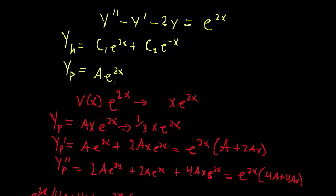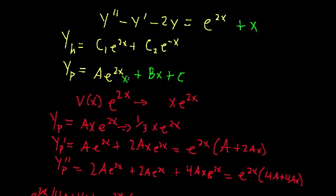The major point is: if you ever see a term in your particular solution that is linearly dependent with a term in your homogeneous solution, then you should modify it by multiplying by x. I really have to stress that you only do that for the term that's overlapping. For example, if our non-homogeneous part was e^{2x} + x, our initial guess would be a·e^{2x} + bx + c. You'd compare that to your homogeneous solution, see that the e^{2x} term overlaps, and multiply just that term by x — not the entire expression. Just that one term.